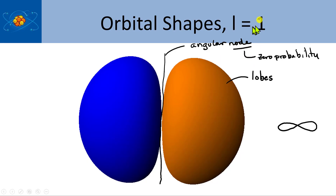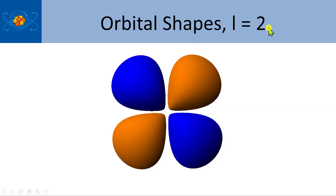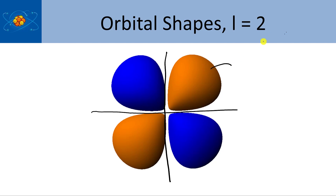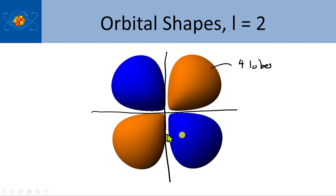So now we have L equals 2, and there are two angular nodes that go like this. These are the lobes — there are four lobes. You'll also notice the colors are different, and we're going to talk about that. We still need to look at the equations a little more, but I want to describe why we have different colors for different parts of the orbitals.